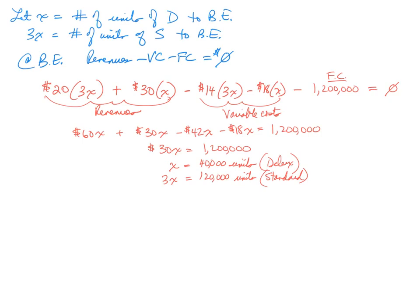As a quick review: when you have more than one product and you're trying to find break-even, first find the sales mix ratio. Second, find the contribution margin of the bundle — the weighted average contribution margin. Third, use that in your break-even equation to find break-even in bundles. Finally, remember to convert those bundles into the number of units of each type of product to find the total break-even in units.